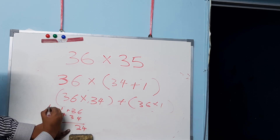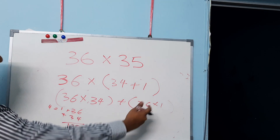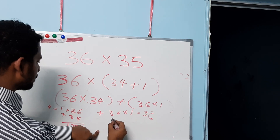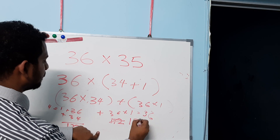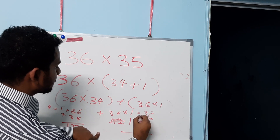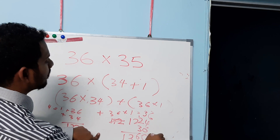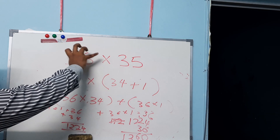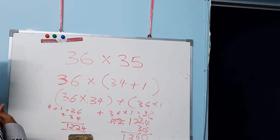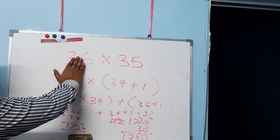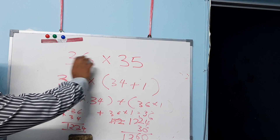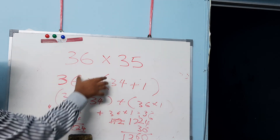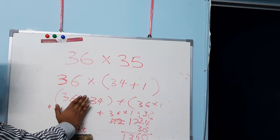Applying the rule to 36 times 34: right side gives 24, add 1, and 4 times 3 is 12 — giving 1224. Then add the leftover: 36 times 1 is 36. So 1224 plus 36 equals 1260. You can break the numbers in any way you find convenient, as long as one sub-sum satisfies the rules.